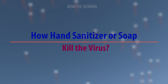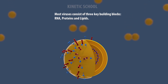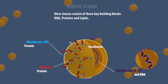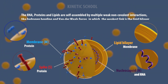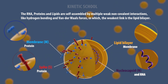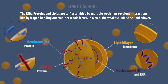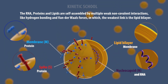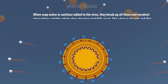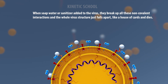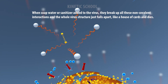How do hand sanitizers or soap kill the virus? Most viruses consist of three key building blocks: RNA, proteins, and lipids. The RNA, proteins, and lipids are self-assembled by multiple weak non-covalent interactions, like hydrogen bonding and van der Waals forces, in which the weakest link is the lipid bilayer. When soap, water, or sanitizer is applied to the virus, they break up all these non-covalent interactions, and the whole virus structure just falls apart like a house of cards and dies. Thus, hand sanitizer and soap kill the virus.